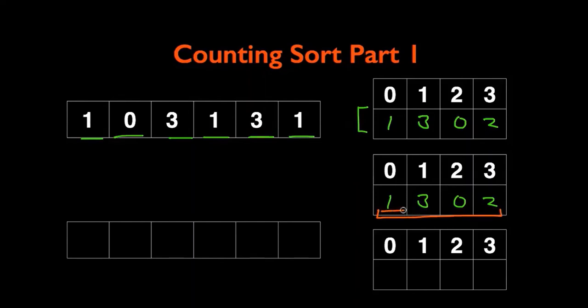We can store these numbers in an array of length 4. The second step will be calculating the prefix sum array. The second number will be 3 plus 1 which will be 4, the third number will be 4 plus 0 which is 4, and the fourth number will be 4 plus 2 which is 6.